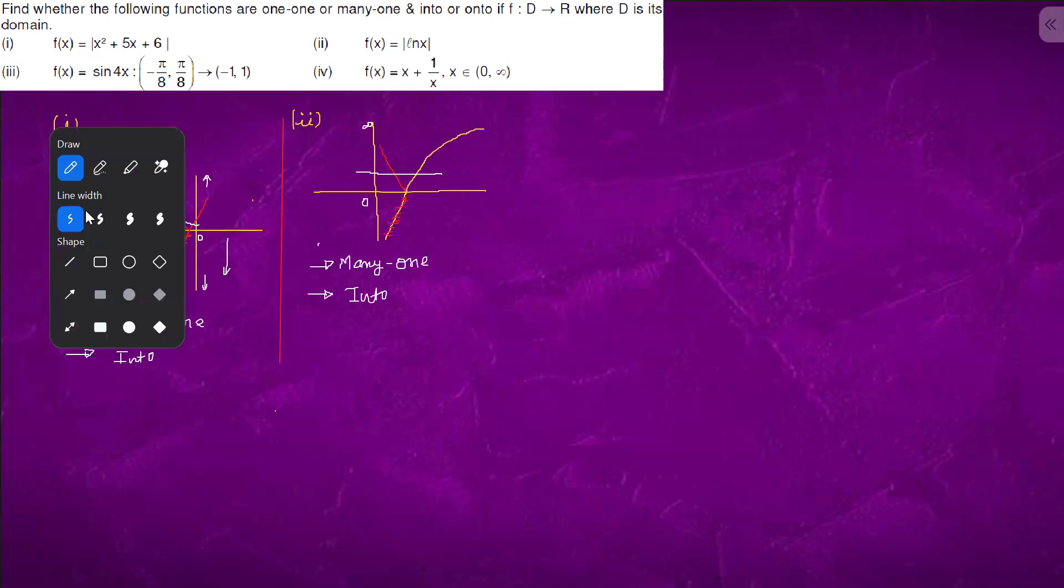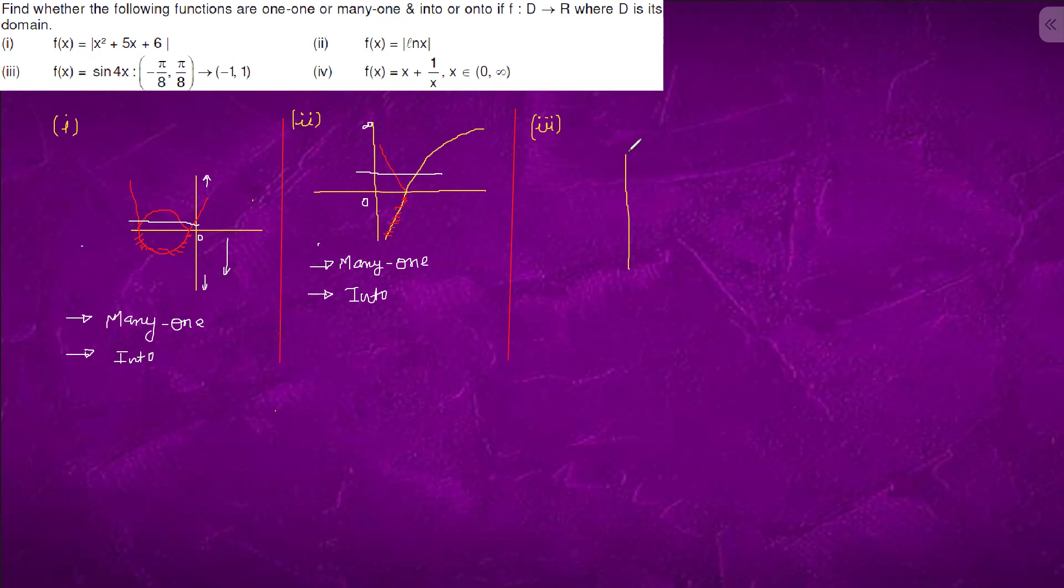Question number three. We have coordinate axis. We know that the time period of sin 4x is pi by 2. So this is pi by 2.